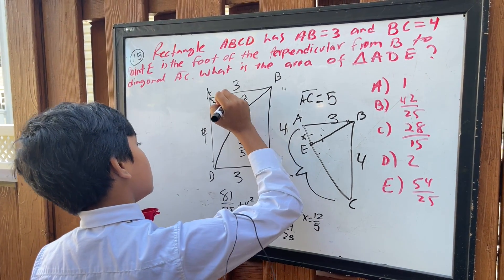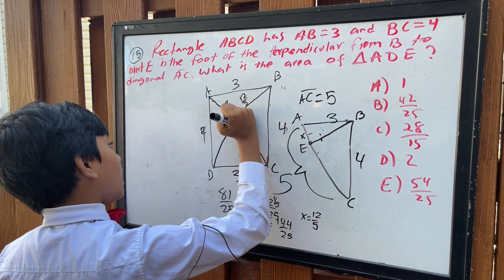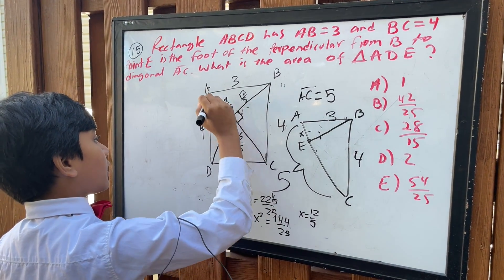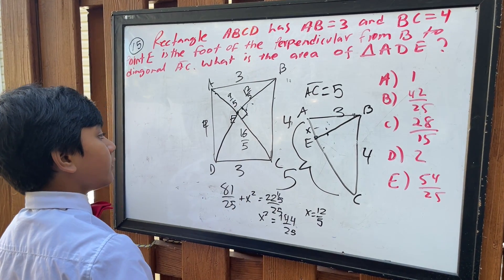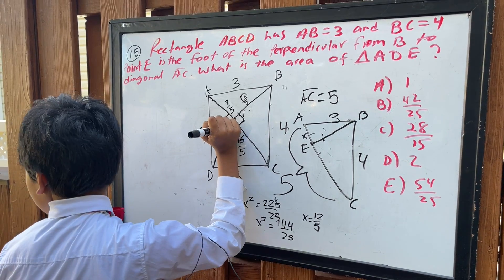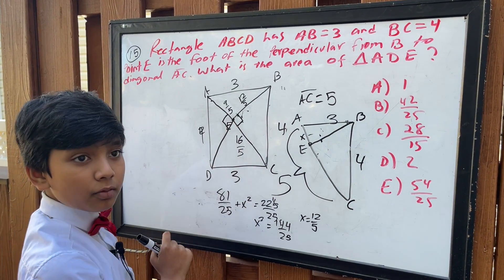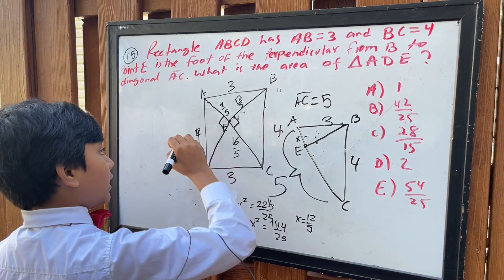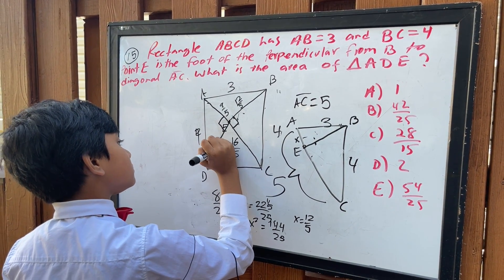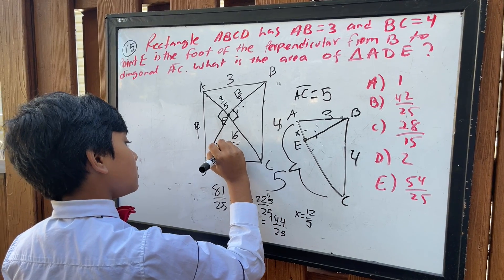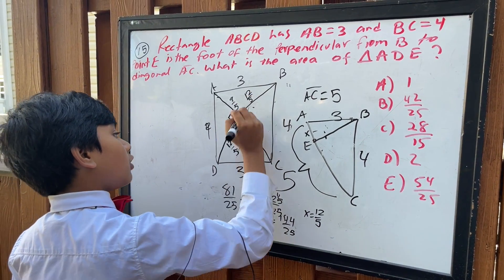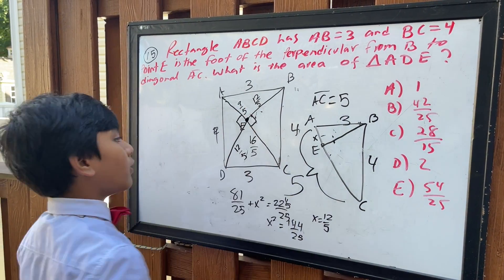Now, we already know one of the parts over here, nine over five. Now we just need to know the other part, and that has to be twelve over five. These two are equidistant from this point in the center.